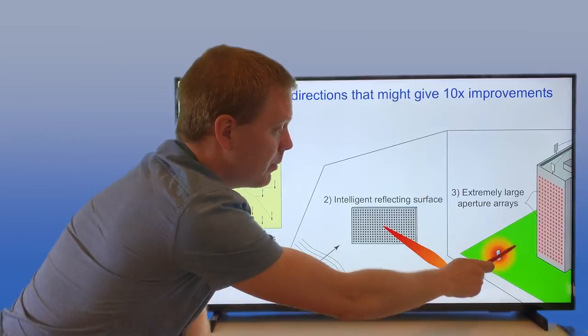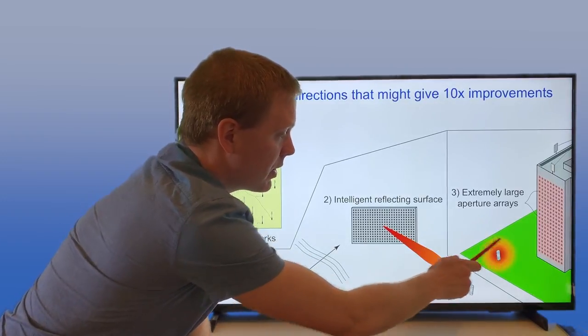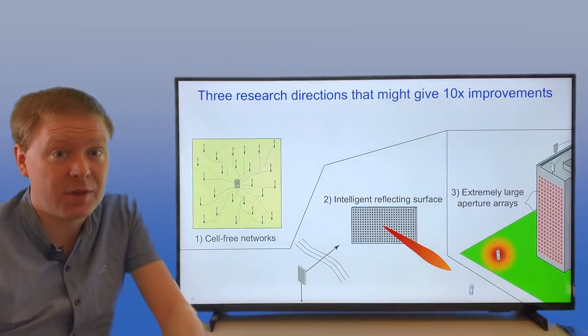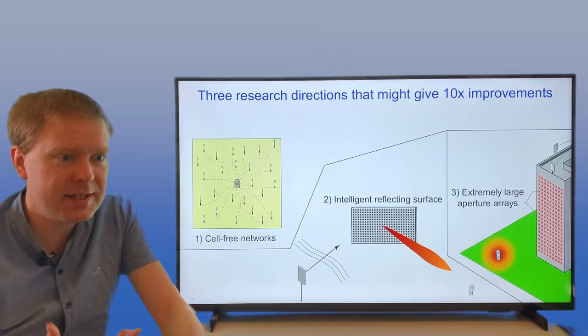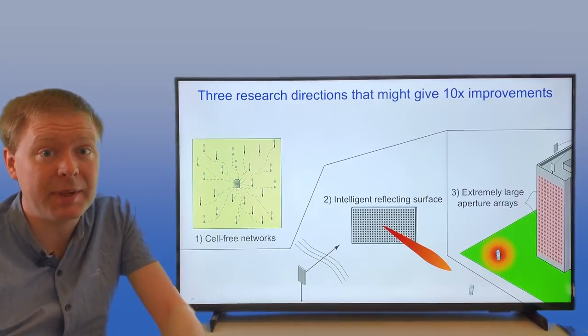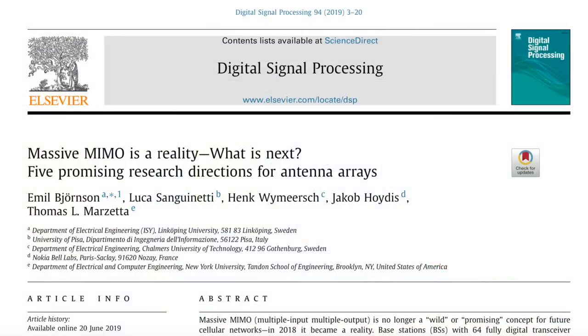Then you can get extremely good resolution in how you focus signals in space. So instead of sending a beam, you might be able to focus the signal in just a small ball around where the receiver is located. These are three different future use cases that I believe a lot in. If you want to learn more, I recommend you read our paper, 'Massive MIMO Reality: What is Next? Five Promising Research Directions for Antenna Arrays.'